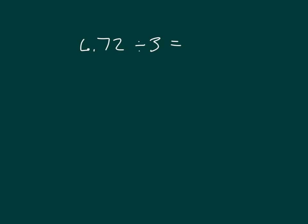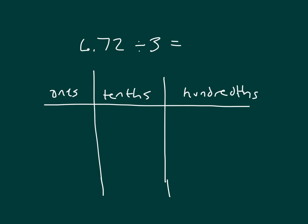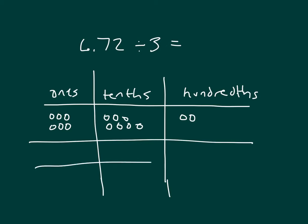Let's use our place value chart to be able to divide 6.72 hundredths divided by 3. First I'll model my number 6.72 hundredths. Then I'm going to make 3 groups.